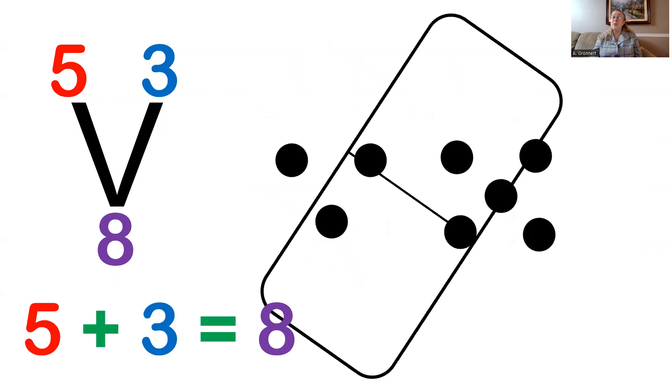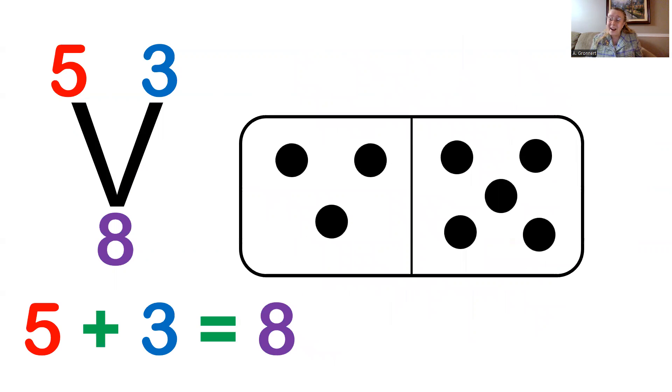All we have to do is flip it around. Now you can see the parts are in a different order. So we can write this addition equation as 3 plus 5 equals 8.